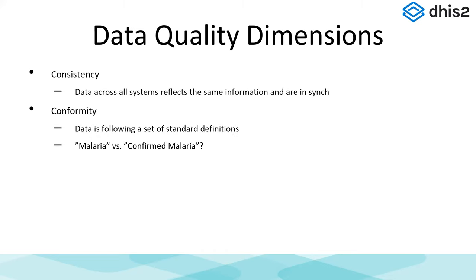Conformity is one we stumble over quite a lot. Is the data following a set of standard definitions? A good example is when in form design or system use, many countries have a lot of different ways of naming the same thing — for example, 'malaria' versus 'confirmed malaria'. Which one do we use? Which one is the data we should consistently be using? Which one is actually reported on? Sometimes it's not at all clear which data should be used.